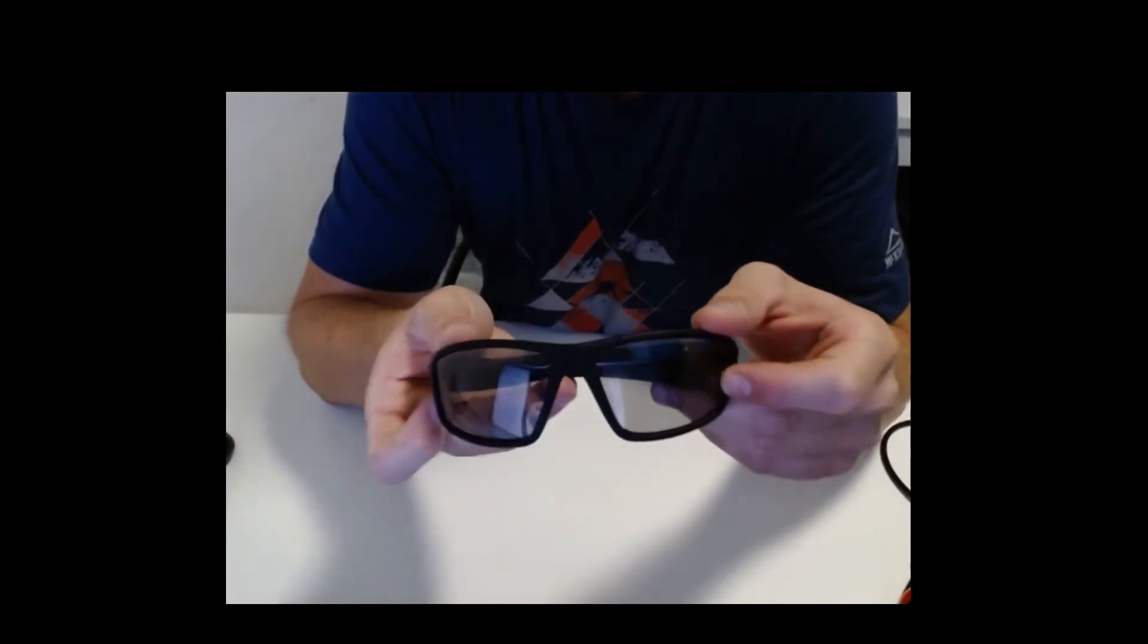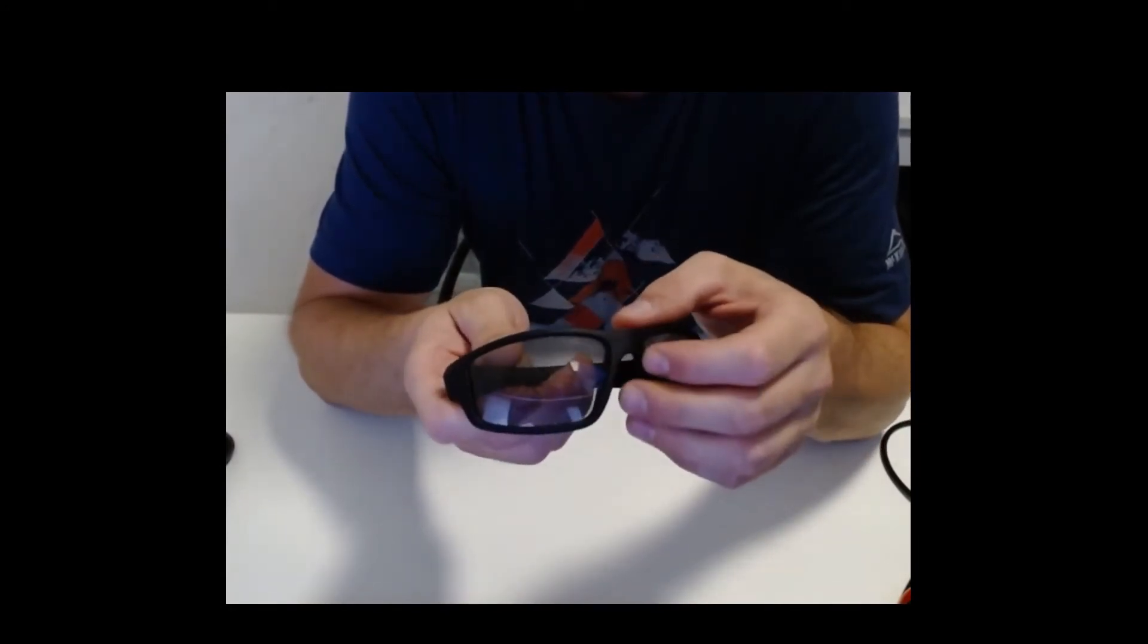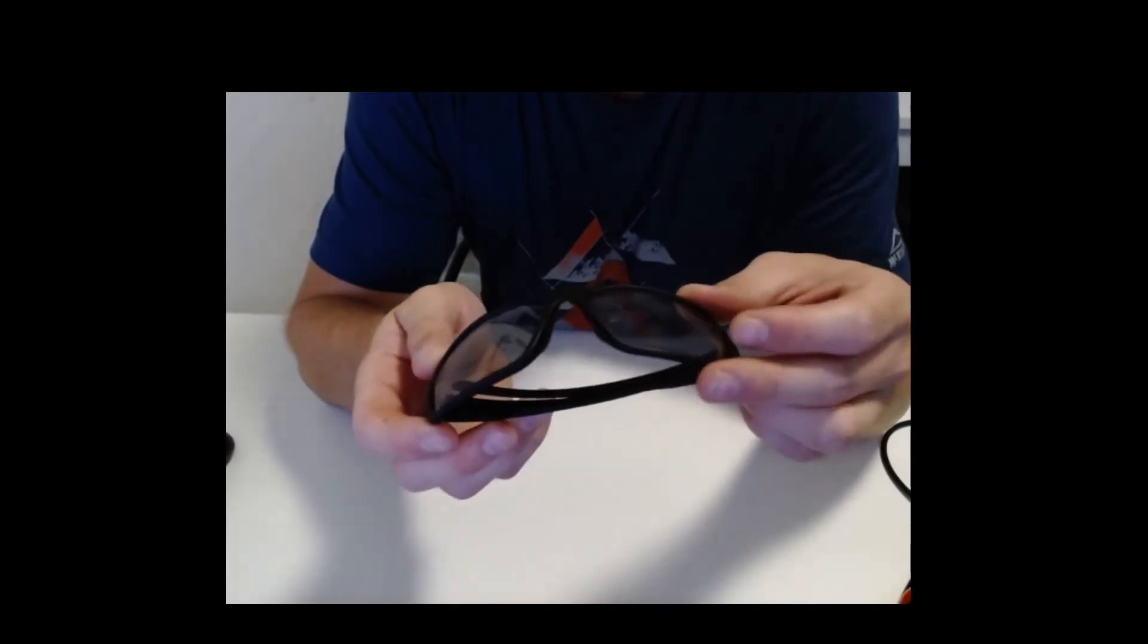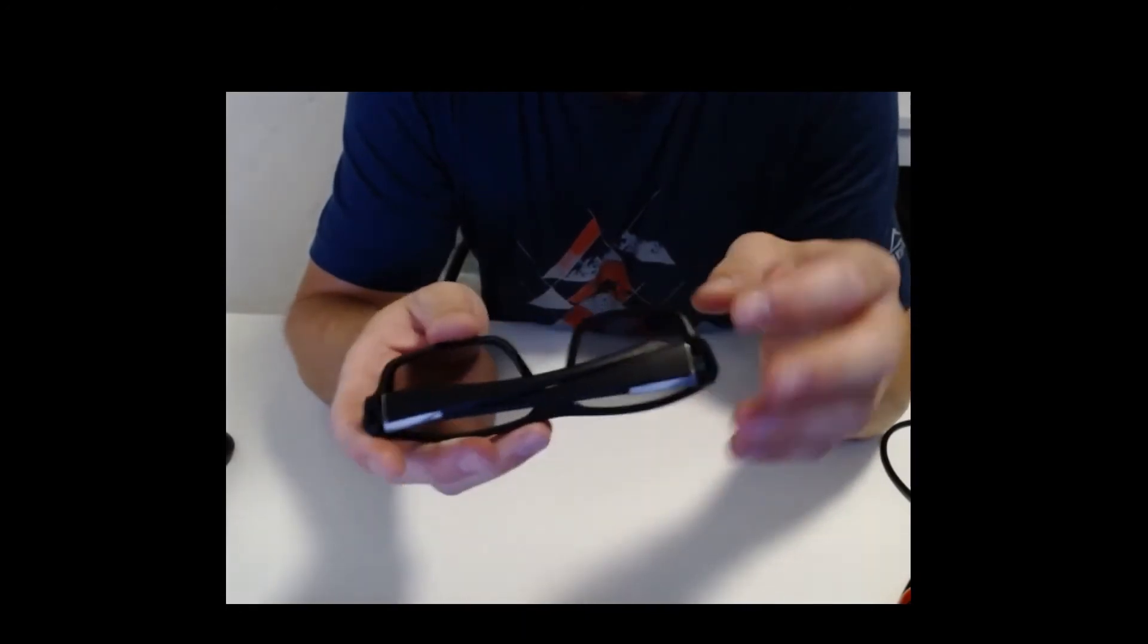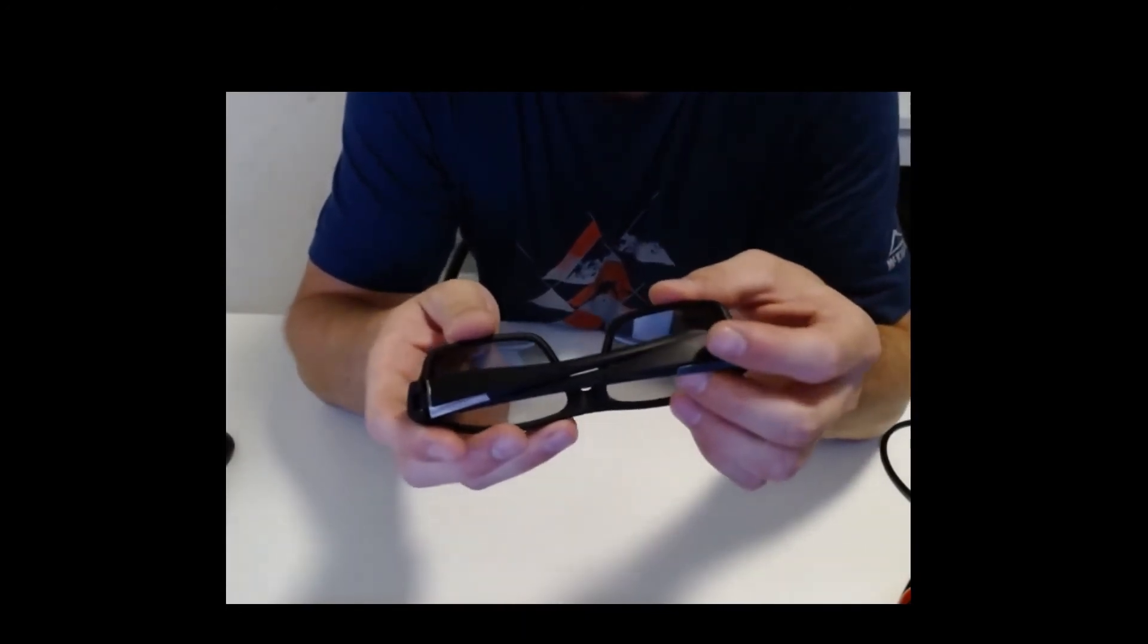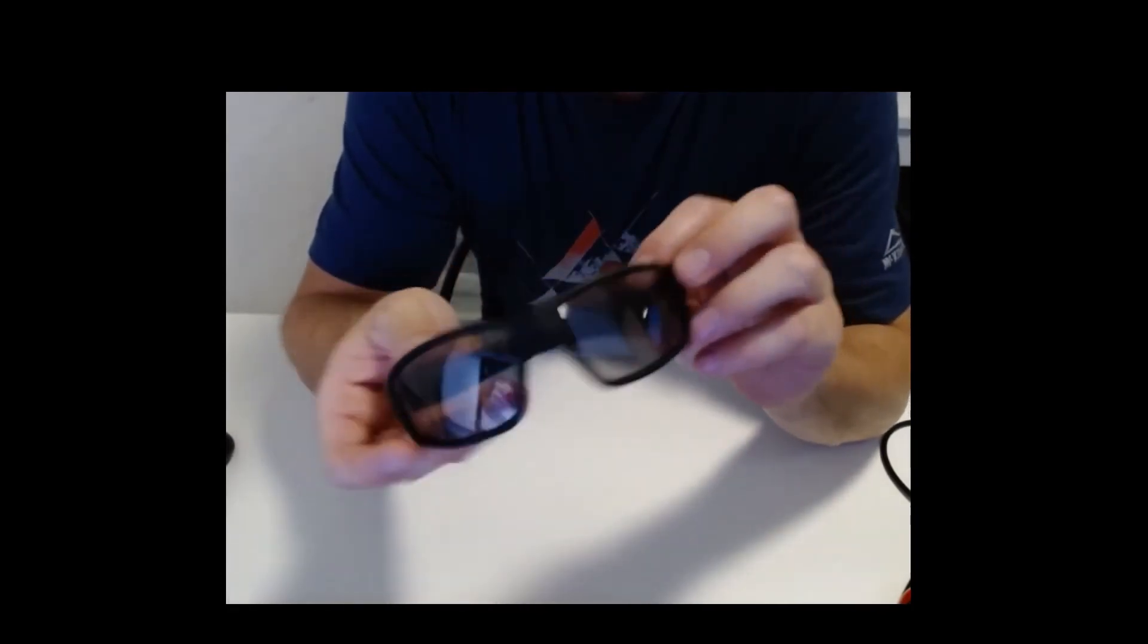Another good feature is that they are also photochromic lenses. That means that when it's very sunny the lenses get darker and when it's low light or cloudy they whiten.